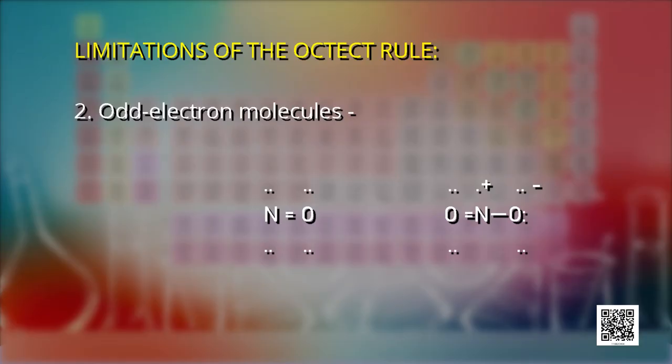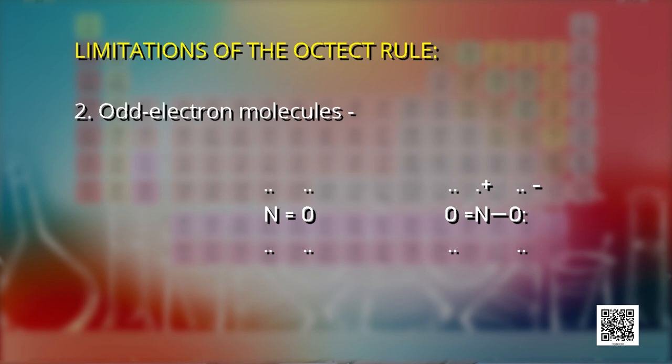How are these structures stable? Explore and find out. Other electron-deficient compounds include AlCl3 and BF3 — draw their structures and find out how they are stable despite being electron-deficient. Second exception: odd electron molecules. In molecules with an odd number of electrons, like nitric oxide (NO) and nitrogen dioxide (NO2), the octet rule is not satisfied for all atoms.